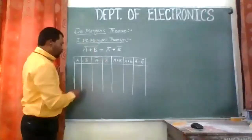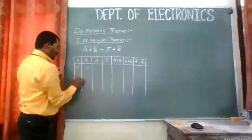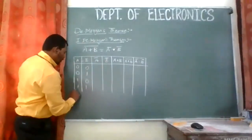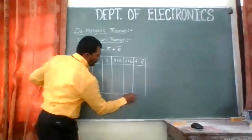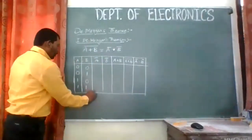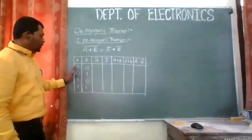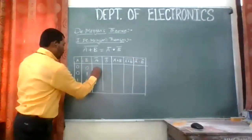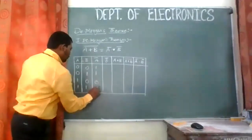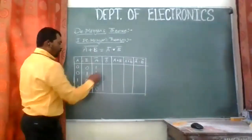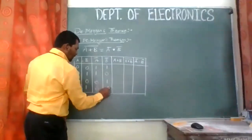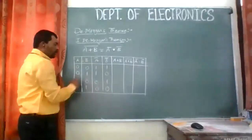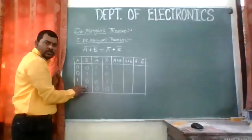The probabilities for A and B are: 0,0 — 0,1 — 1,0 — 1,1. A complement will be 1, 1, 0, 0. B complement will be 1, 0, 1, 0. A plus B gives 0, 1, 1, 1 — OR operation. The complement of A plus B is 1, 0, 0, 0.